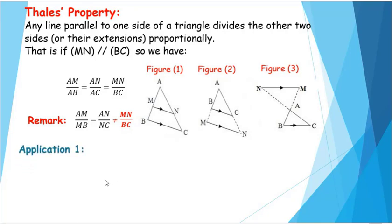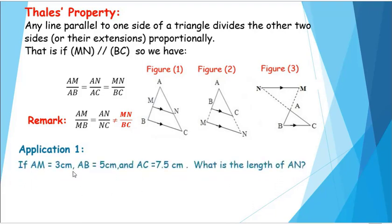Application one: If AM equals 3 cm, AB equals 5 cm, AC equals 7.5 cm, what is the length of AN?